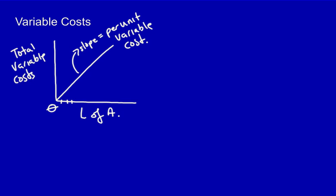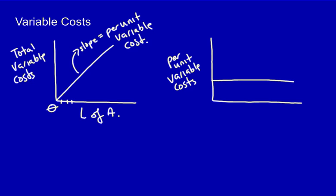If I now graph the per unit variable costs, you can see that the per unit variable costs are constant. They don't change with the level of activity. Total variable costs vary with the level of activity. Per unit variable costs are constant with the level of activity.